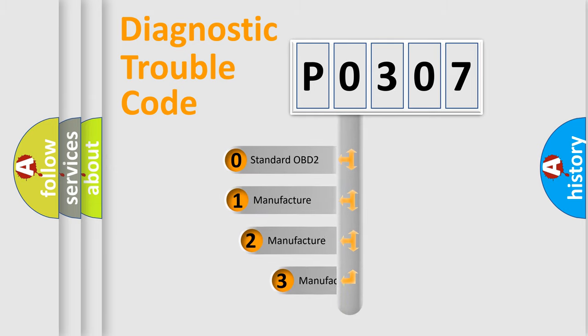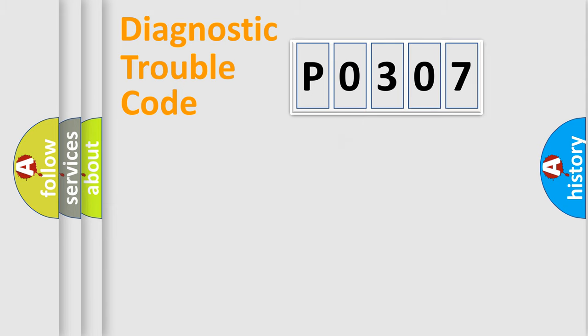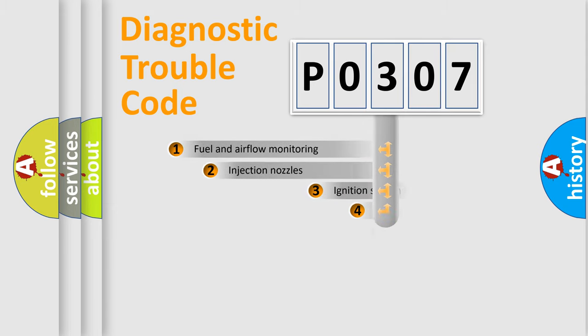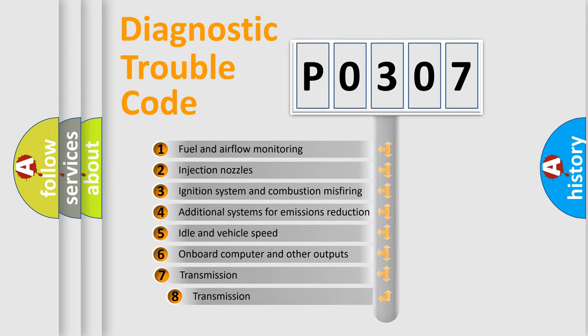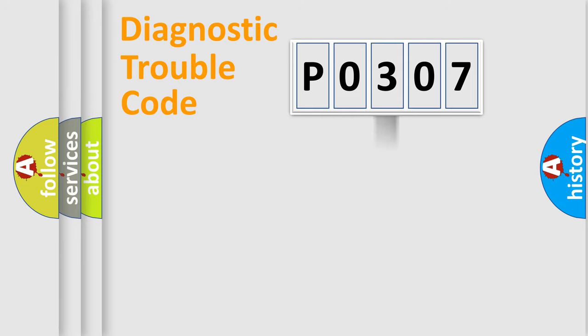If the second character is expressed as zero, it is a standardized error. In the case of numbers 1, 2, or 3, it is a more precise expression of the car-specific error. The third character specifies a subset of errors. The distribution shown is valid only for the standardized DTC code.